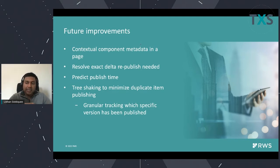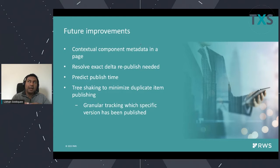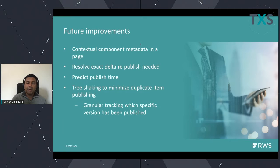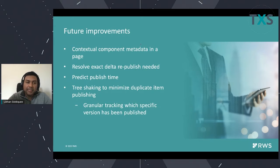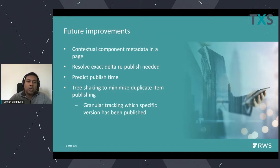Because components are now immutable and templates are not mutating the data, component presentations no longer affect component content. When you look at components, they are always the same regardless of where they were used — on a page, as a separate item, or on any page. So when you make a change to that component, you only need to republish that single component, not the containers where it was used. This will also allow us to predict publish timing, and we will also do further work on optimizing publishing through tree shaking — ensuring that if an item has already been published, we will not include it again.